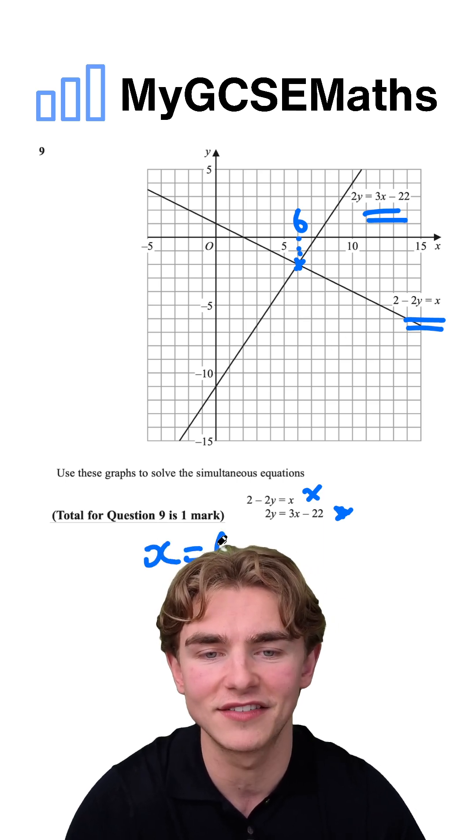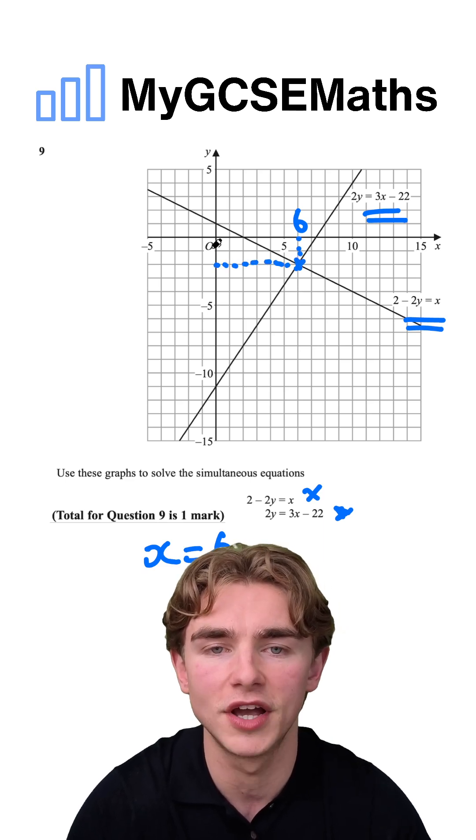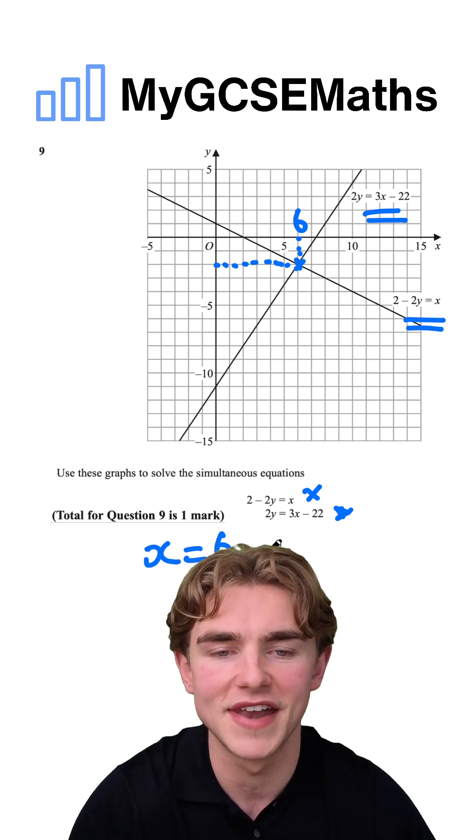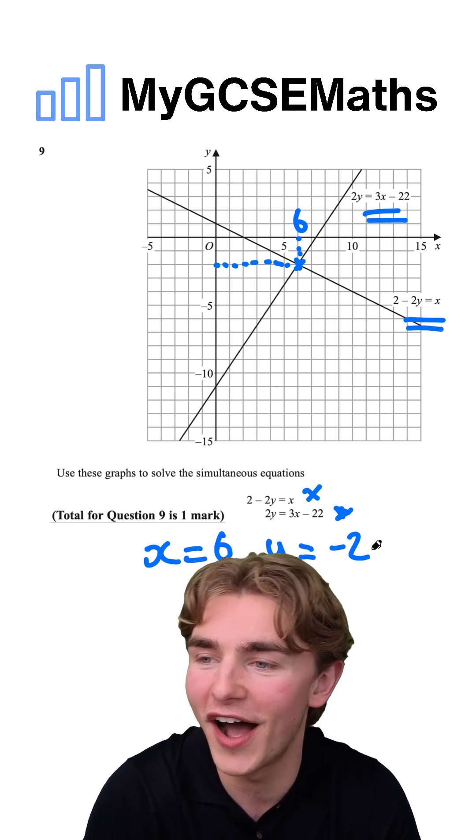Our value for x is going to be x equals 6. And what about y? Reading over to our y-axis, we're going to go down two boxes. So it's negative 2, giving us y equals minus 2 as our answer for y.